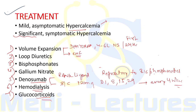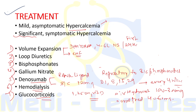Glucocorticoids can be used when hypercalcemia is 1,25-dihydroxy vitamin D-mediated, as they reduce the conversion of 25-hydroxy vitamin D to its active form. Options include IV hydrocortisone 100–300 mg daily or oral prednisolone 40–60 mg daily, given for 3–7 days. Other drugs that inhibit conversion to active vitamin D include ketoconazole, chloroquine, and hydroxychloroquine.